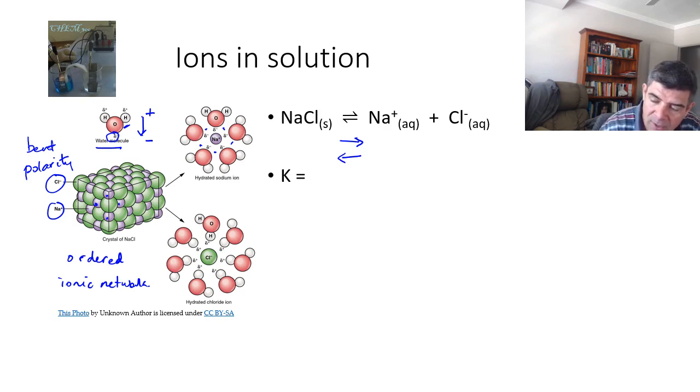Our equilibrium constant, we know, is concentration of products over concentration of reactants. And so in this case, we've got the concentration of the sodium ions multiplied by the concentration of the chloride ions and then divided by the concentration of the sodium chloride itself.